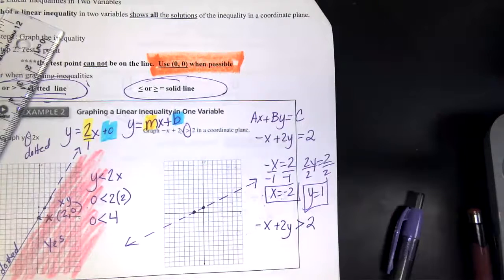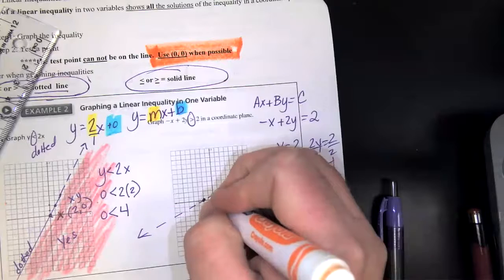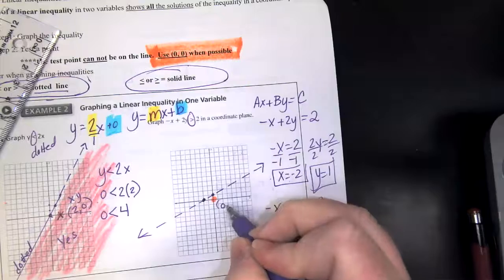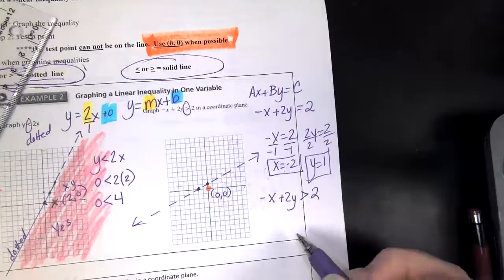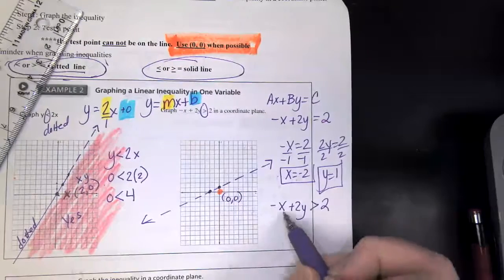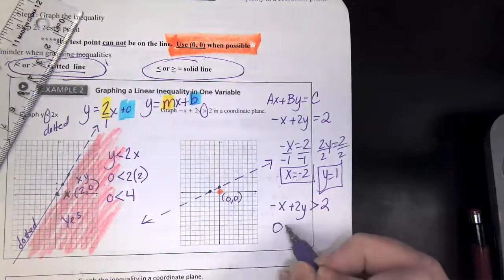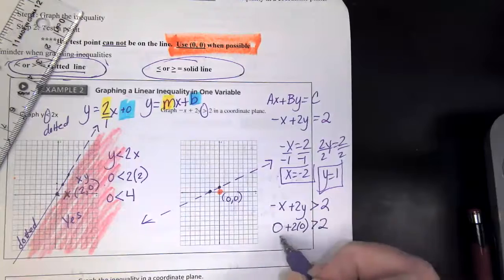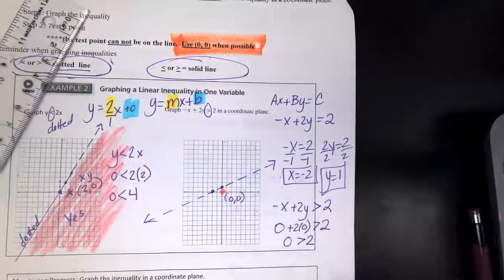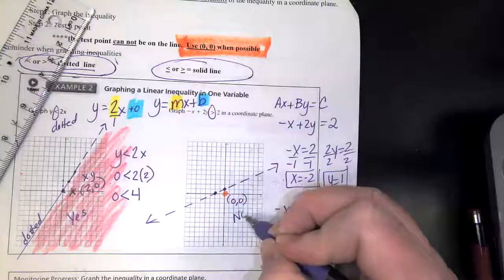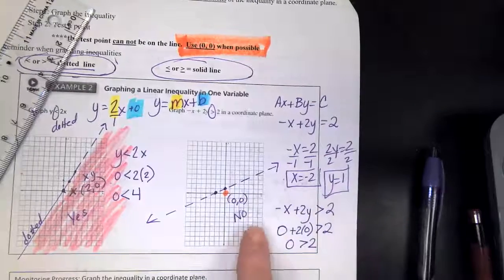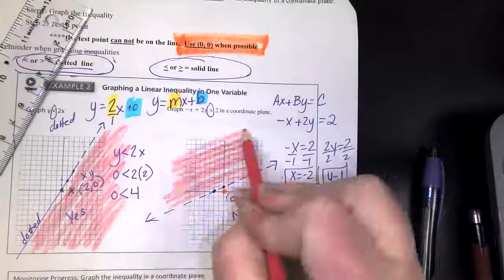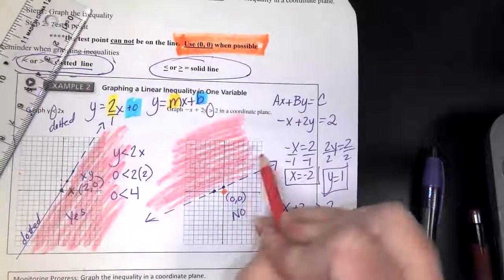You also need to make sure you're doing your test point. So I wonder if I tested and this did not make it true and I write no. Well, then I know that I can't shade this side. I have to shade the other side. So that's the nice thing. You don't have to do it twice. All right, friends, this is in standard form.